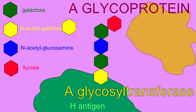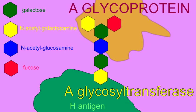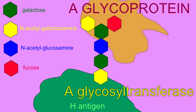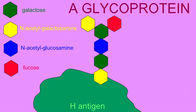If someone possesses the A allele of glycosyl transferase, then the sugar N-acetylgalactosamine is added, and this is the carbohydrate chain which defines an individual as blood type A.